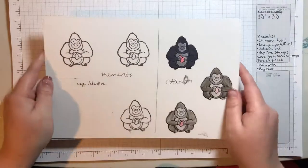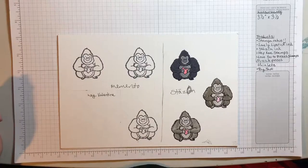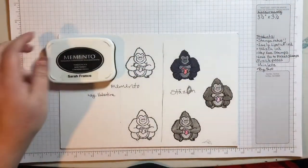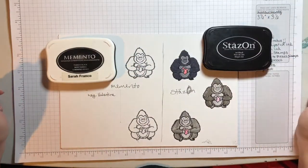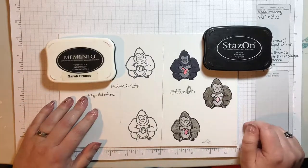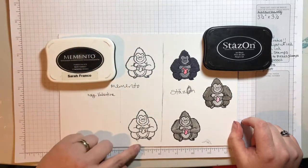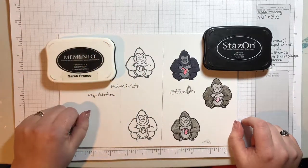So that made a challenge as far as what I used to color it with and what I used to stamp. On this side, I used Memento ink and then on this side, I used Stazon ink. I liked the crisper image that I got with Stazon versus the Memento. It smudged a little and the stamp slid on the surface when I tried to stamp with it.